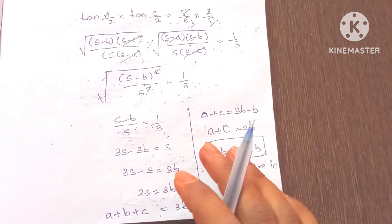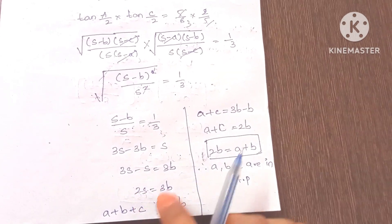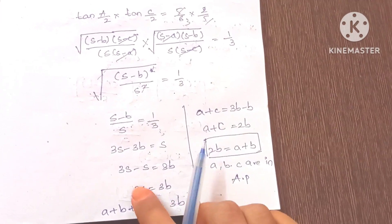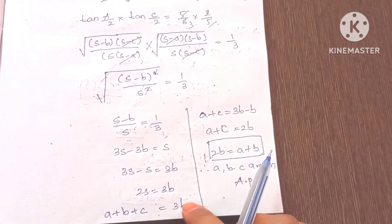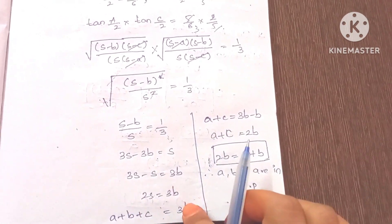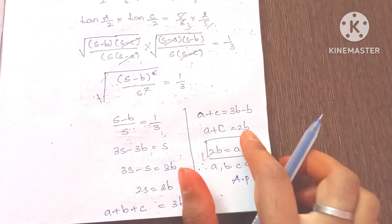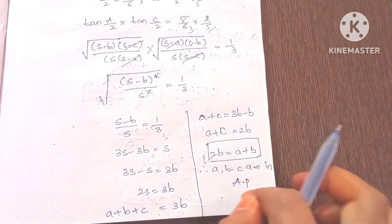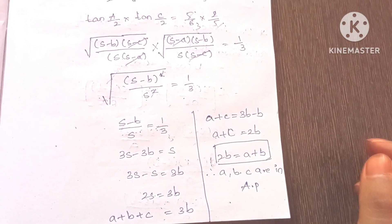In the question we have to find the relationship between a, b, c. So 2s = a + b + c. Therefore a + b + c = 3b, which means a + c = 3b - b = 2b. So a + c = 2b. This is an arithmetic progression (AP) relationship.